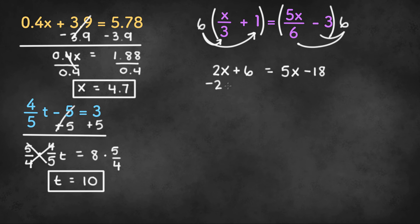We can subtract 2x from both sides of the equation. And we're left with 6 on the left hand side. 5x minus 2x equals 3x minus 18.